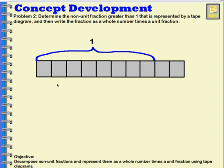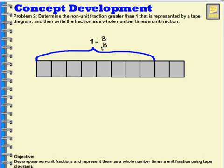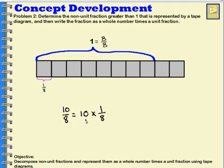Let's look at this one. In this one, I have ten parts shaded, but I also have my whole showing, and my whole is made up of eight parts. So my whole is made up of eight parts, and eight of those parts are shaded, plus two more. So I could see this as ten one-eighth parts — since each unit fraction is one-eighth, ten-eighths equals ten times one-eighth.